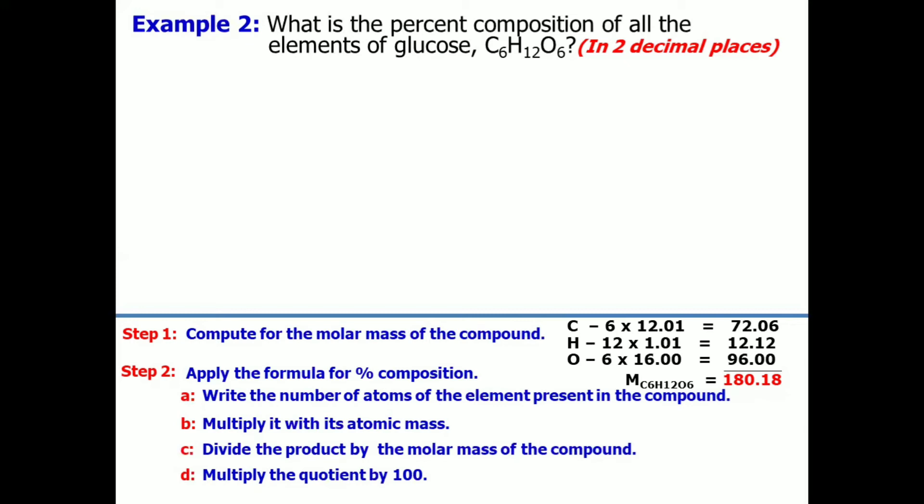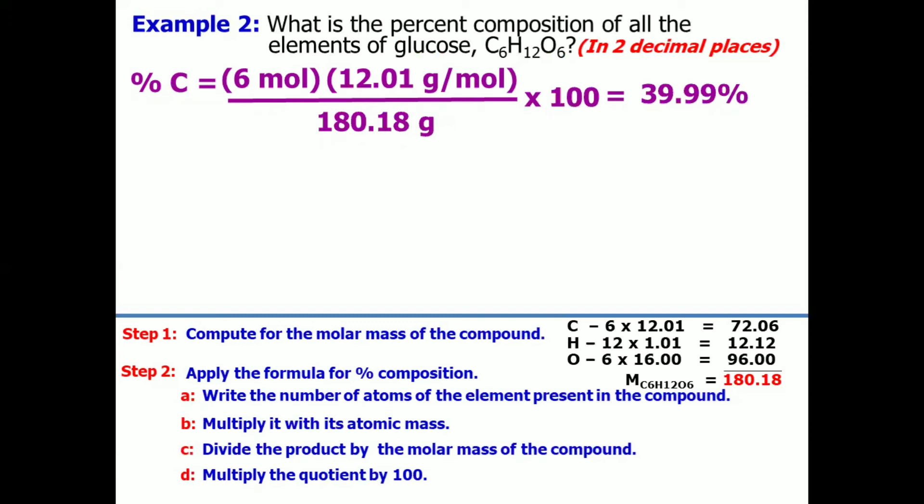Let's have step number 2. Let's apply now the percent composition formula. So, again, step A. Write the number of atoms of the element. So, we got 6 per carbon. Multiply it by 12.01 grams. Then, let's use the molar mass of this compound, which is 180.18 grams. Then, multiply by 100. And so, the result for carbon is 39.99%.